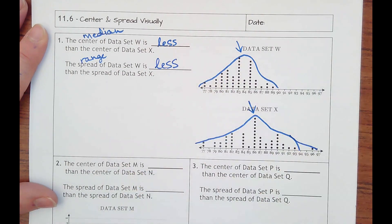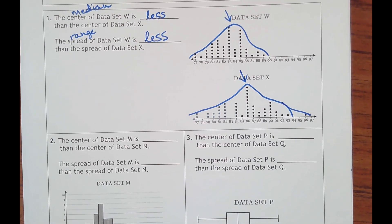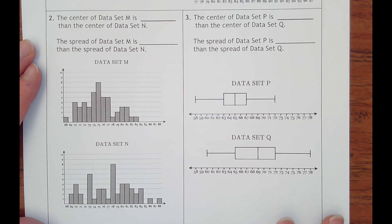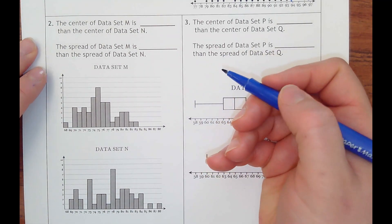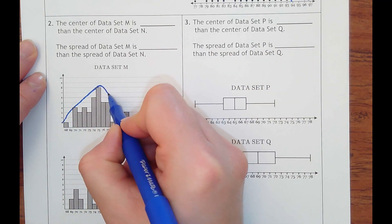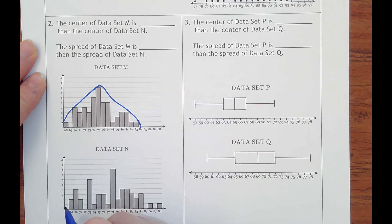So that's on a dot plot. Let's look at number two on a histogram. It says the center of data set M is blank than data set N. So again, you can look at it or if it helps you, draw a curve over it all.